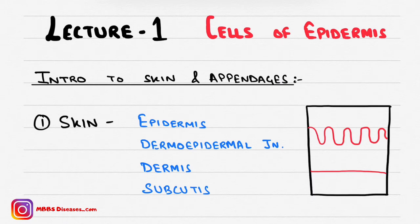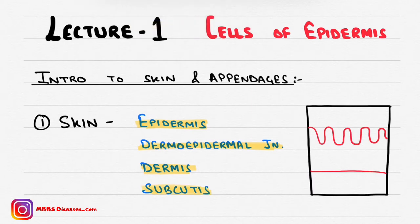The first lecture is on cells of epidermis, and to understand dermatology we have to start from the beginning and build our concepts. We should know that the skin is comprised of epidermis, the dermo-epidermal junction, the dermis, and the subcutis part. Look at this diagram.